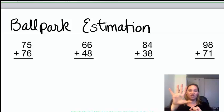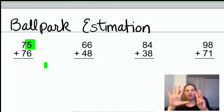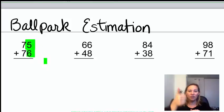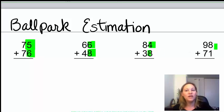5, see how 5 has a thumb? 5, you go up. So, 75, if it's a 5 or 6 or 7, 8 or 9, you round up, and 75, the 5 is going to tell us what to do. 76, the 6 is going to tell us what to do. In 66 and 48, 66 we care about the 6, and 48 we care about the 8. 84, we care about the 4, 38 we care about the 8, 98 we care about the 8, and 71 we care about the 1.